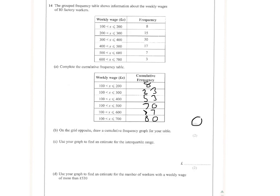We've got to draw the graph. We've got to use it to estimate the interquartile range. And we've also got to work out how many people earn more than 530 pounds. So we'll do that on the graph.